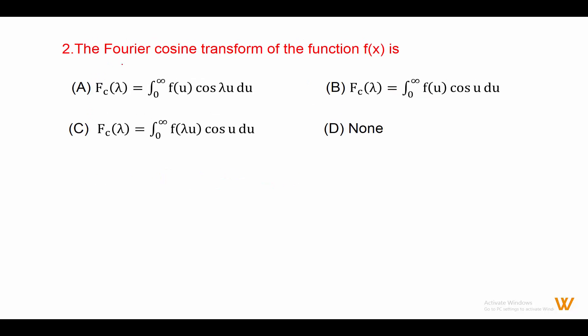Second: the Fourier cosine transform of function fx is — again, this is the definition of Fourier cosine transform, denoted by Fc. Fc(lambda) equals integration from 0 to infinity of f(u) cos(lambda u) du. Answer is option A.